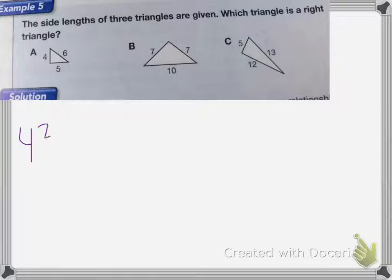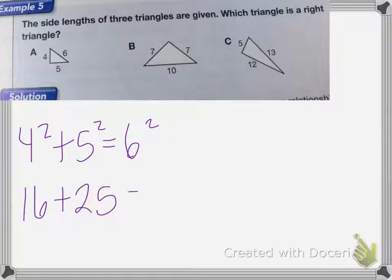I have 4 squared plus 5 squared, and if it's a right triangle, that would equal 6 squared. So 4 squared is 16, plus 5 squared is 25, and 6 squared is 36. Well, 16 plus 25 is not equal to 36, so A is not a right triangle.